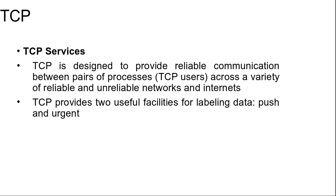TCP is designed to provide reliable communication between pairs of processes such as TCP users across a variety of reliable and unreliable networks and internets. TCP provides two useful facilities for labelling data: first, push, and second, urgent.